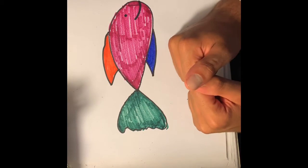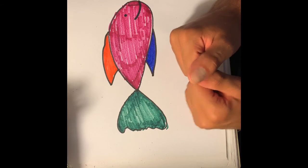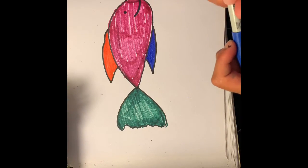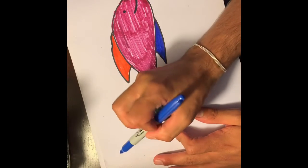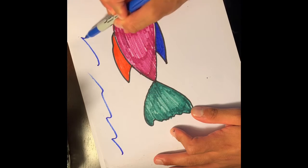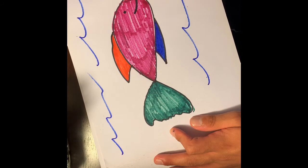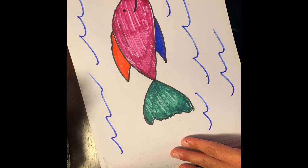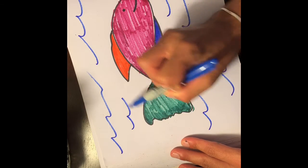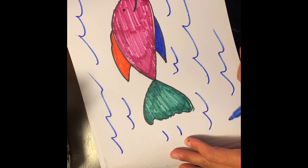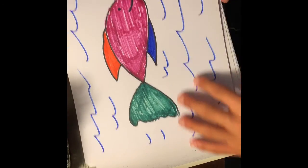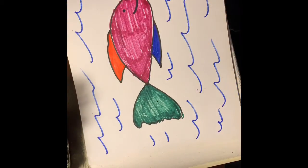Now fish live in the ocean so we also have to make the ocean around him. So you guys can make little waves, you guys can do this however you want, and I'm gonna do a bunch of different colors.